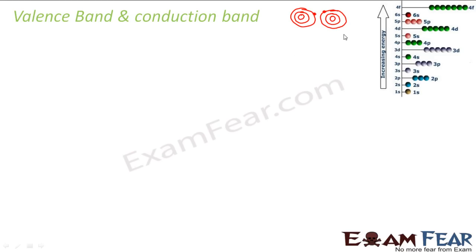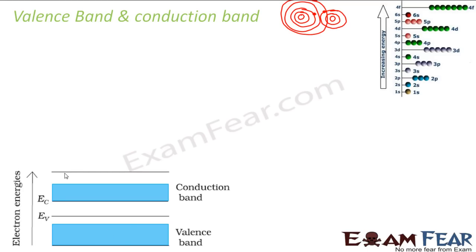Any band which is above the valence band is known as the conduction band. In case of sodium, the valence electron is in the outermost shell, so any energy level beyond that is empty — there is no electron beyond that. So any energy level beyond the valence band is known as the conduction band. When such overlapping takes place, we talk about a valence band and a conduction band, and we generally denote them in what is known as an energy band diagram.